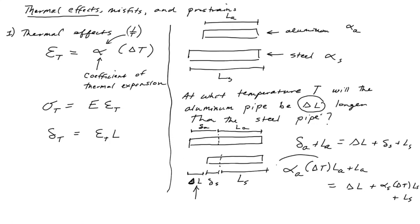Alright. So here's our equation. And here's our unknown, delta T. So we just solve for delta T, which gives us delta T is equal to delta L plus LS minus LA over alpha A LA minus alpha S LS.